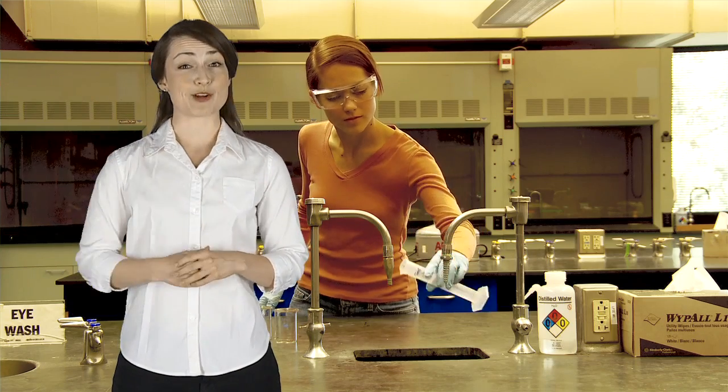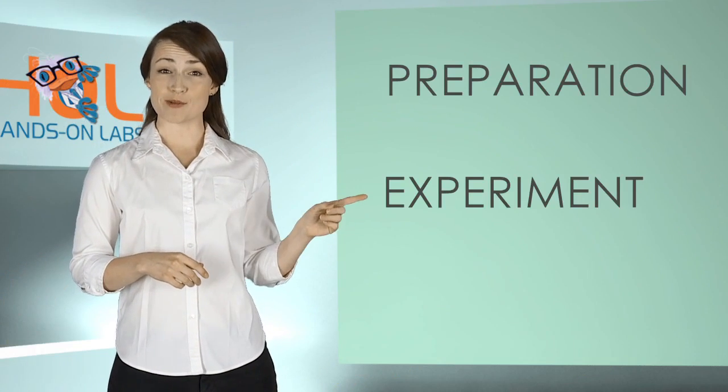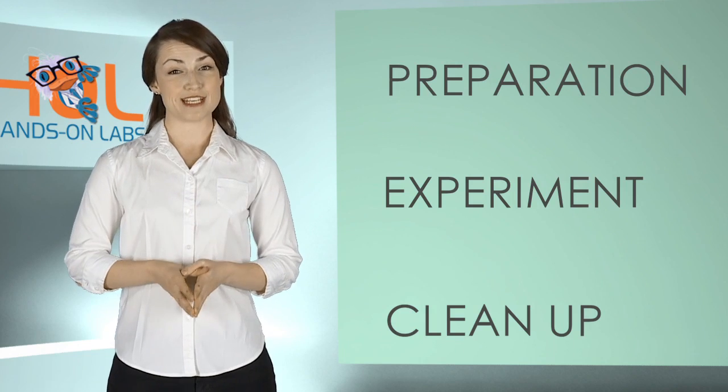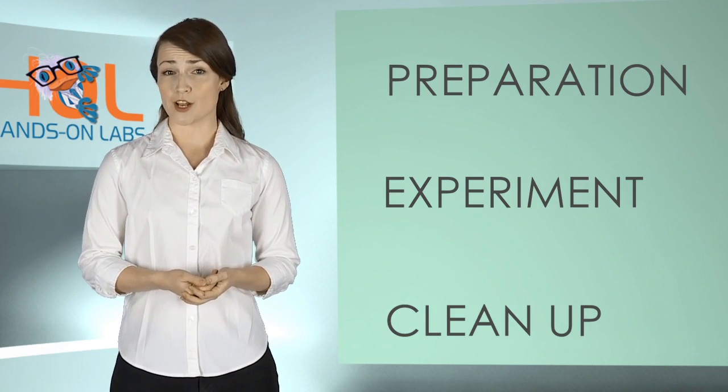Just like in a campus lab, there are three phases of laboratory safety measures for the at-home lab: preparation, experiment, and cleanup. Each phase has unique safety considerations. The concepts and procedures will differ somewhat working at home compared to a campus lab, but the objectives are always the same.